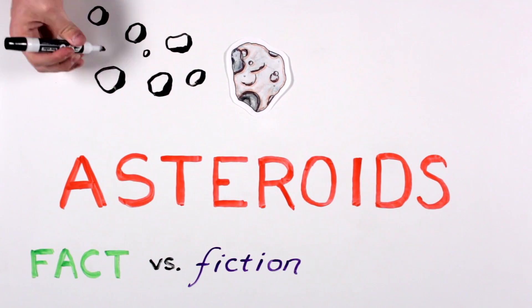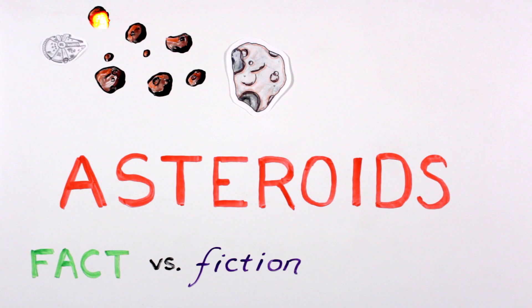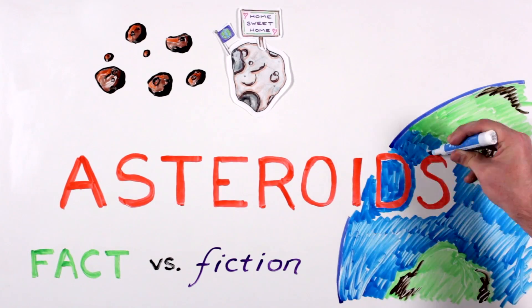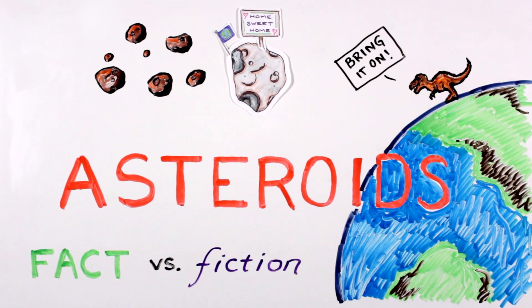Asteroids have many different reputations. Science fiction views them as navigational hazards, colonization frontiers, and threats to the safety of planet Earth. Are these depictions anywhere close to scientific fact? Or are they just science fiction?